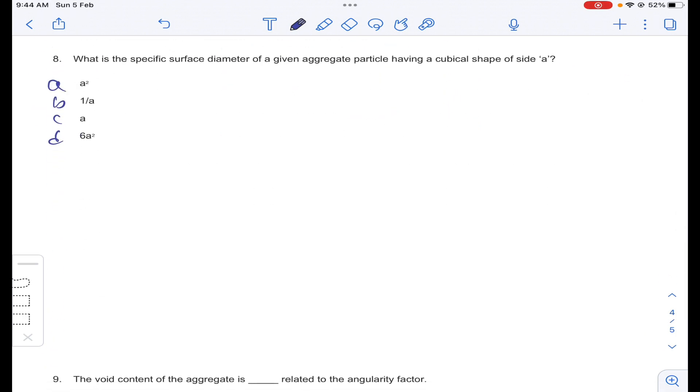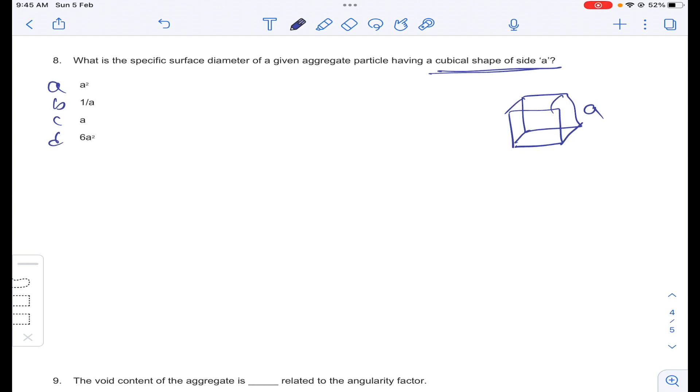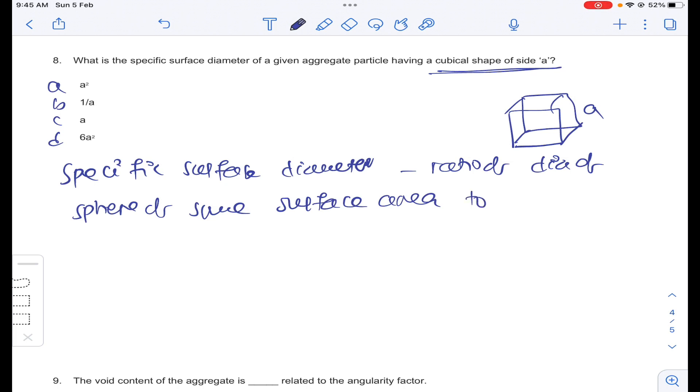Coming to question number 8, what is the specific surface diameter of given aggregate particle having cubical shape of side? It is a given aggregate particle. What is the specific surface diameter for this cubical shape? Specific surface diameter is the ratio of diameter of sphere of same surface area to unit volume of irregular particle.